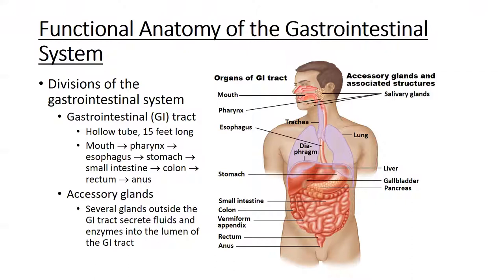The mouth has teeth responsible for chewing and masticating food, lubricating it, and starting the digestive process. The pharynx is a conduit transporting food down into the stomach. The stomach is a storage tank that mulches food together and adds acid to help break down components. From the stomach, we move to the small intestines, then the large intestines or colon, and finally the rectum and the anus.